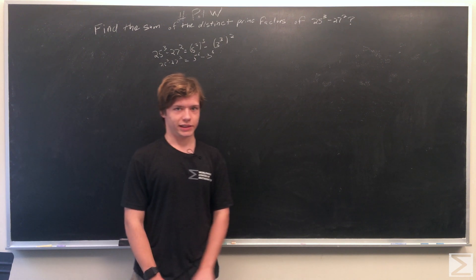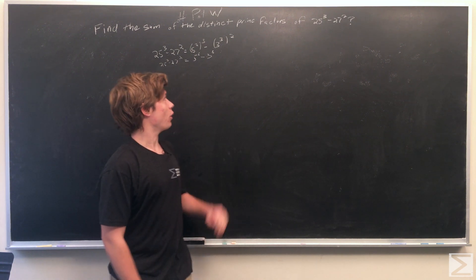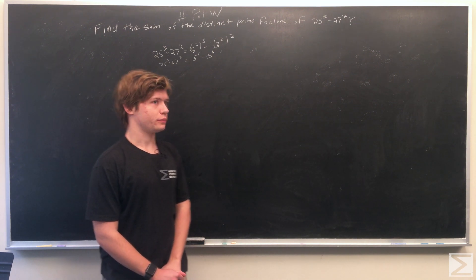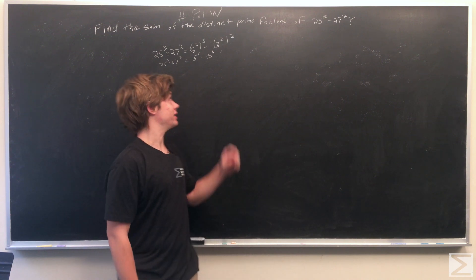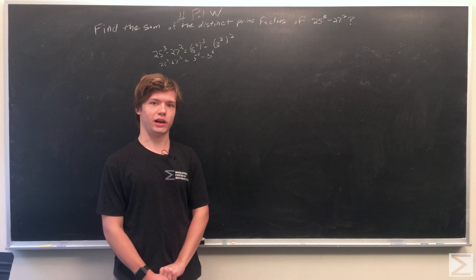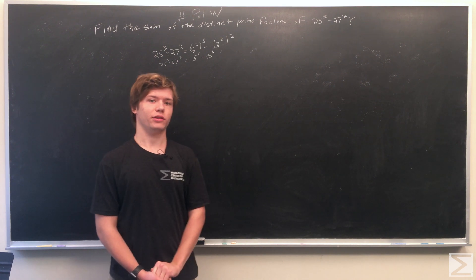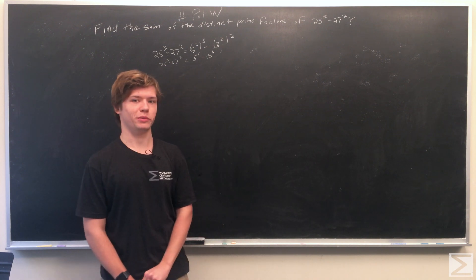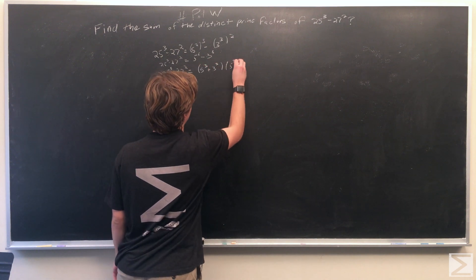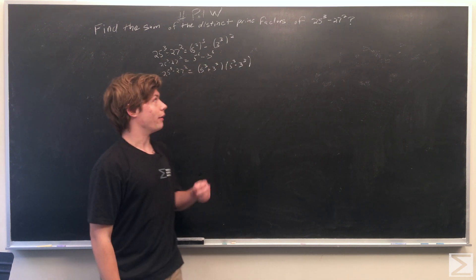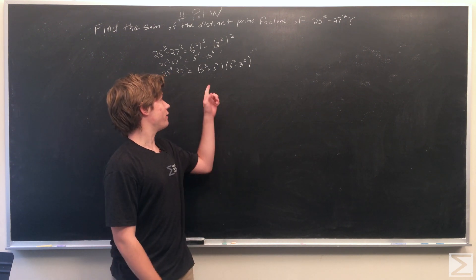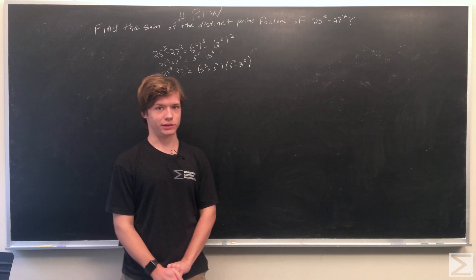And so we see that, since they both have even powers, we can say that 5 to the 6th minus 3 to the 6th is equal to 5 cubed plus 3 cubed times 5 cubed minus 3 cubed, which we're able to do because this is an even power. So we just have written out that 25 cubed minus 27 squared is equal to 5 cubed plus 3 cubed times 5 cubed minus 3 cubed.